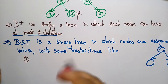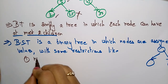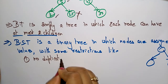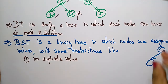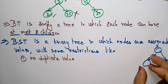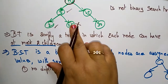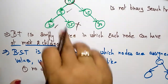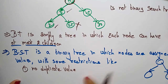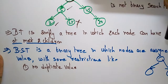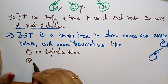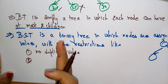So what are those restrictions? The first condition of the binary search tree is: no duplicate values are allowed. Suppose 25 is already present — you can't insert 25 again because it is already there. So no duplicate values are allowed in a binary search tree.